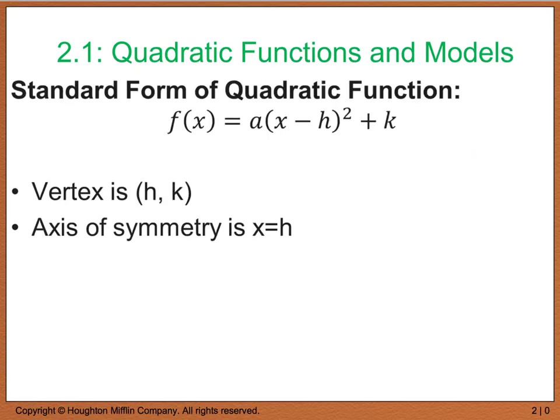Another form that is useful when dealing with quadratic functions is the standard form of a quadratic function. The standard form looks like this: a times the quantity of x minus h, squared, plus k. Your vertex comes from the h and k values, and your axis of symmetry is x equals whatever number you have for h. Let's look at an example that deals with this.